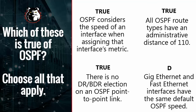D: GigEthernet and FastEthernet interfaces have the same default OSPF speed — believe it or not, that is actually true. They both have a default cost of 1. When the formula to determine OSPF cost for an interface was developed, GigEthernet was essentially a fantasy — the formula works fine at lower speeds, but once you reach FastEthernet, GigEthernet, and even 10 GigEthernet, they all come out to a default cost of 1, which isn't really what we want.